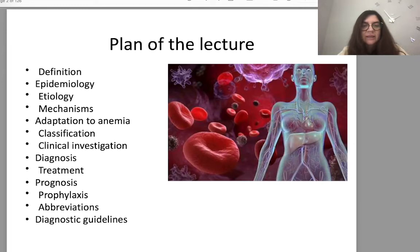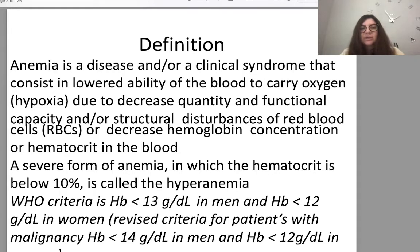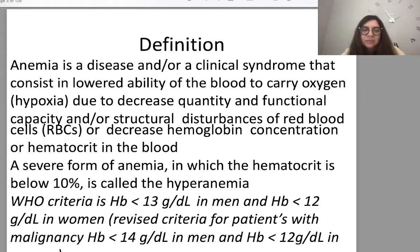Today's lecture is named Anemias. You can see the plan on the slide. Let's give a definition: anemia is a disease or clinical syndrome consisting of lowered ability of blood to carry oxygen — what we call hypoxia — due to decreased quantity and functional capacity or structural disturbances of red blood cells, and decreased hemoglobin concentration or hematocrit. A severe form in which hematocrit is below 10% is called hyperanemia. WHO criteria: hemoglobin less than 13 g/dL in men and less than 12 g/dL in women.